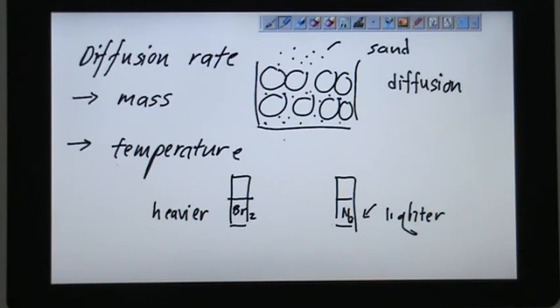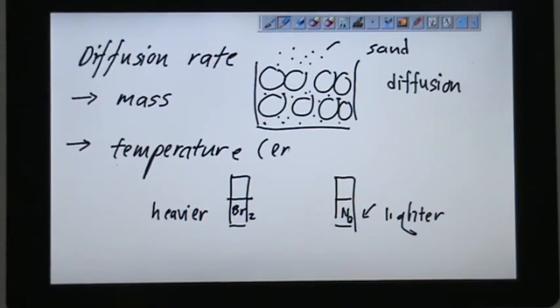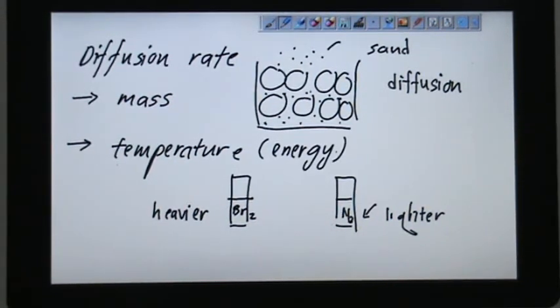Because when temperature is high, the energy of the particle is even higher. Energy to travel from one place to another, to travel from regions of high concentration to regions of low concentration. You have so much energy because of temperature, so it can travel faster and the diffusion rate is better.